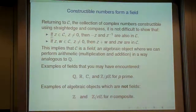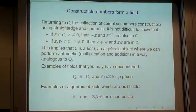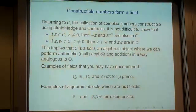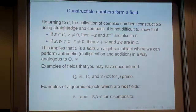Together, these properties imply that the collection of constructible numbers is a field. A field is an algebraic object — like groups, rings, and fields — where you can do multiplication and addition analogously to the rational numbers: you can take inverses of elements, multiply, add, and you have the distributive law, associative law, and so on.